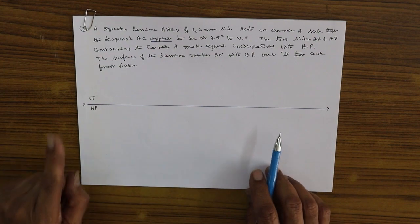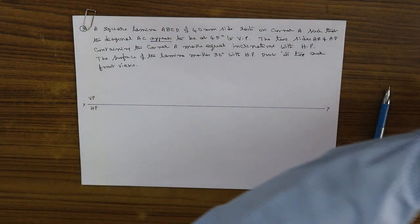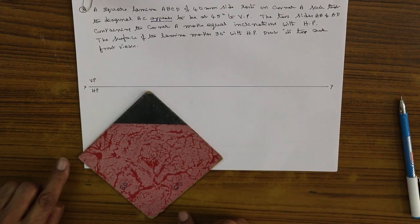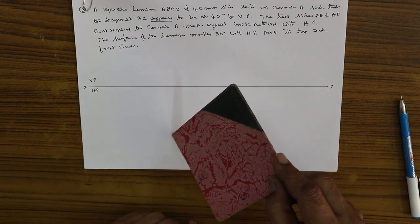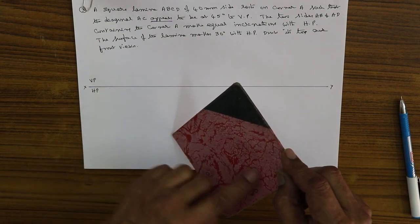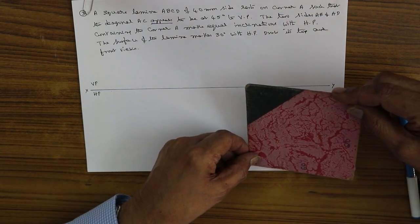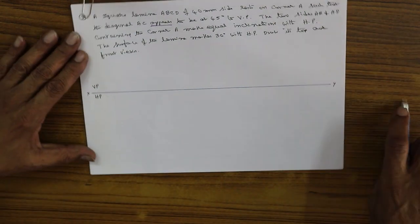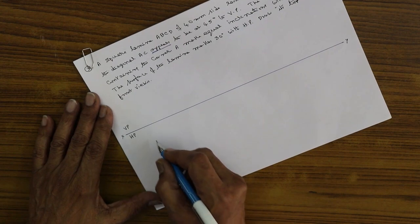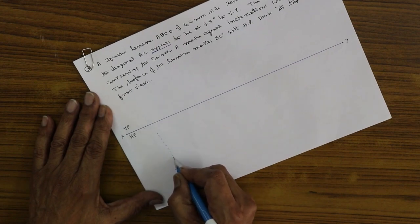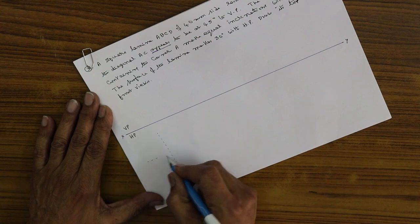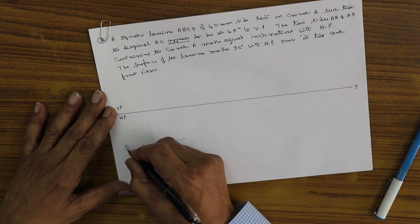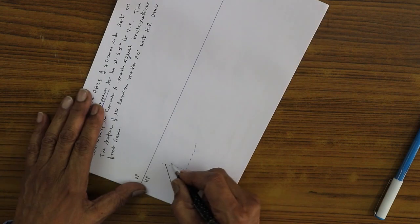The corner of the square laminar should be on the left-hand side. I have a 40 mm side square laminar. I will draw it with the corner on the left. Since the two sides AB and AD are equally inclined to HP, I will make them at 45 degrees each — 45 degrees again, so 45 degrees.